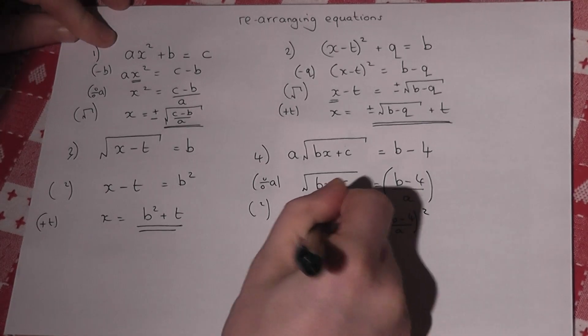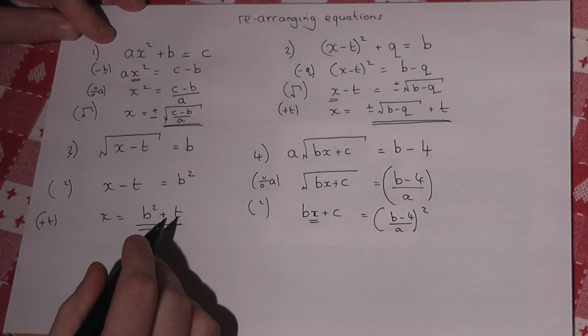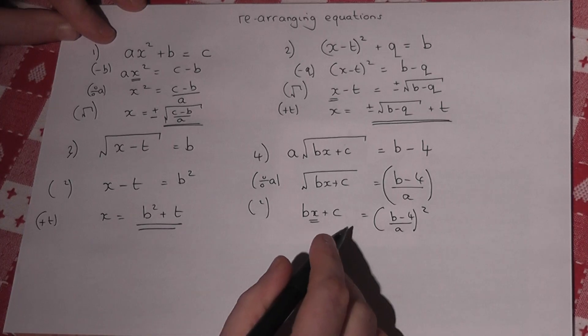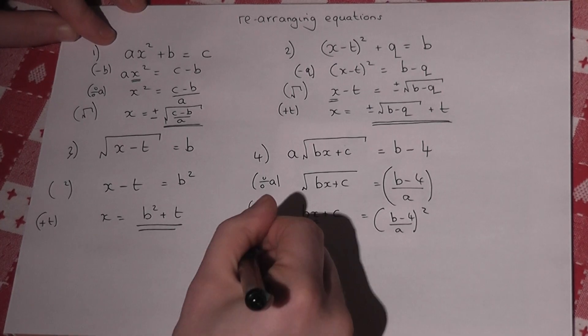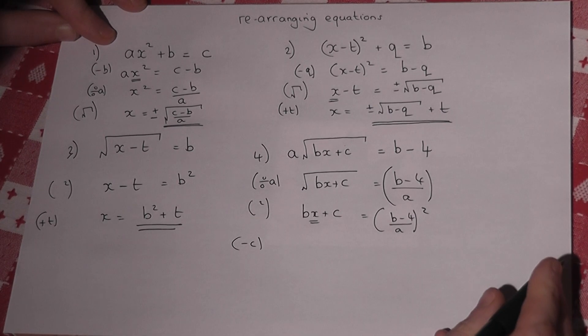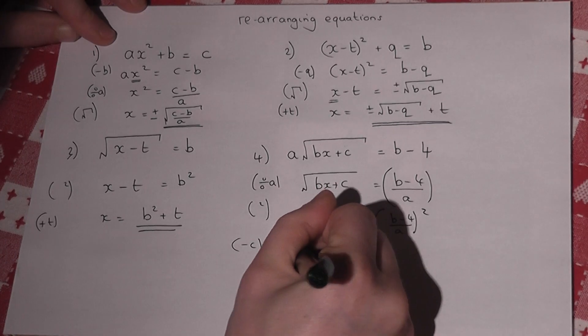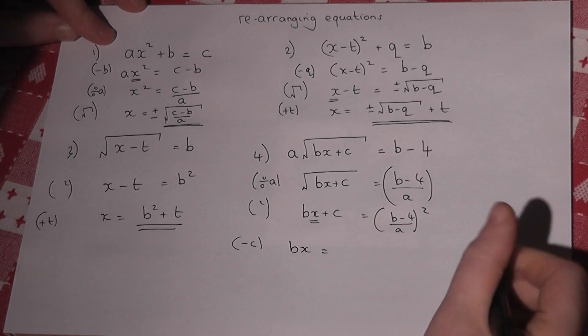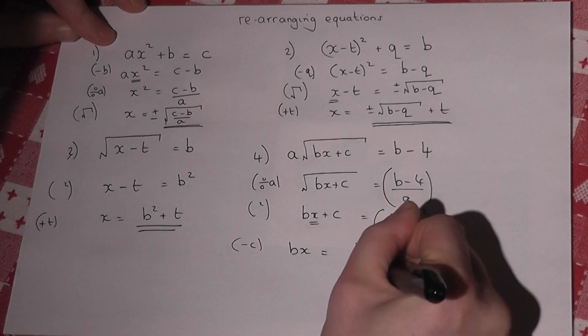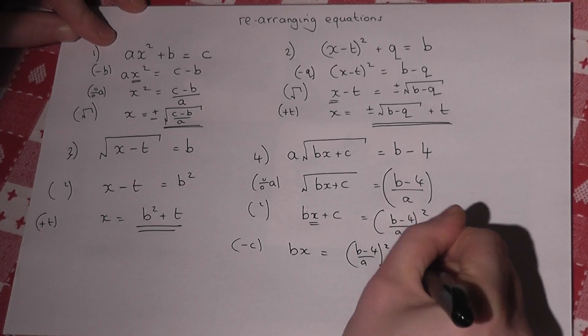But I want x by itself. So I must now do normal equation techniques to get down to x equals. So I take the c away. Gets messy this, but we'll keep on going. bx equals that entire expression, take away c.